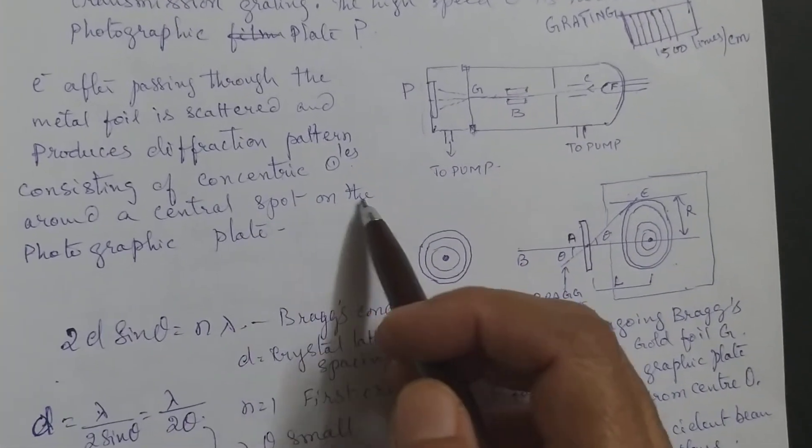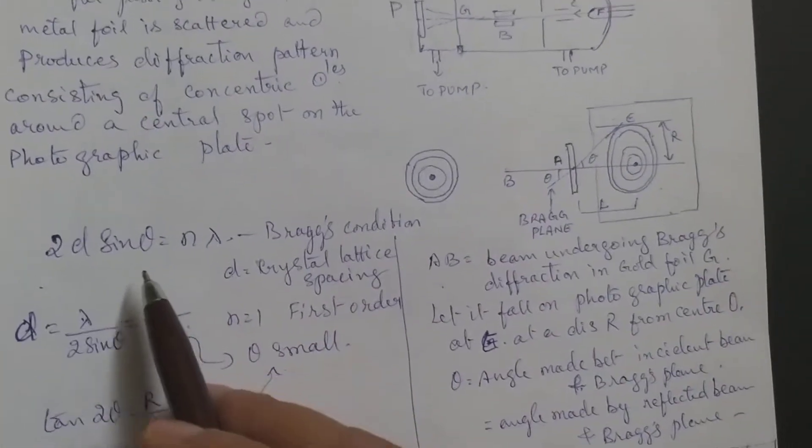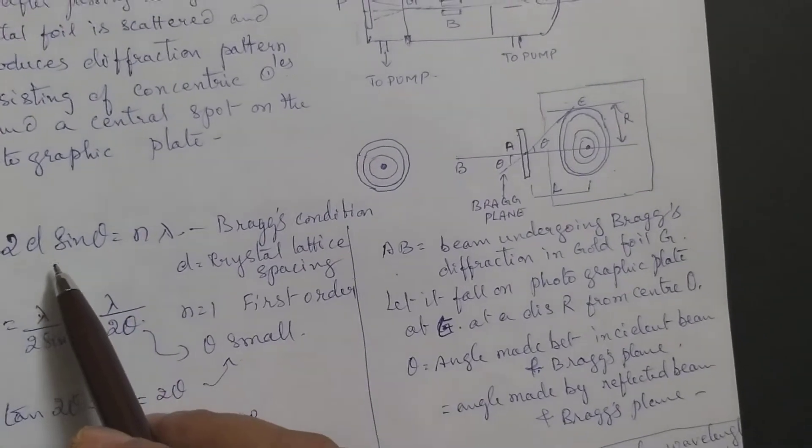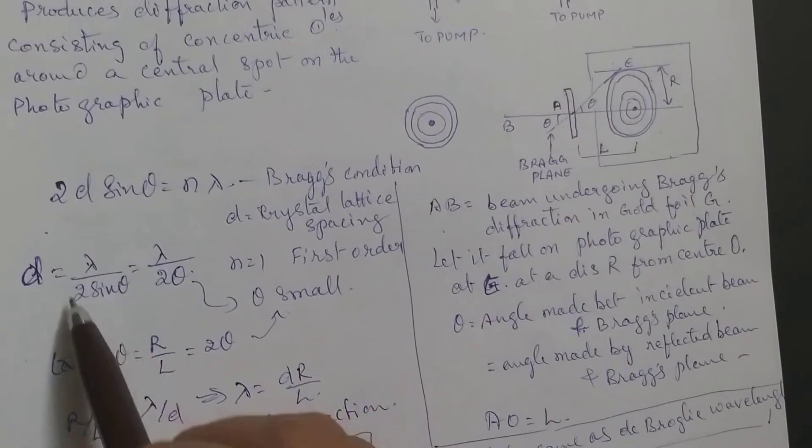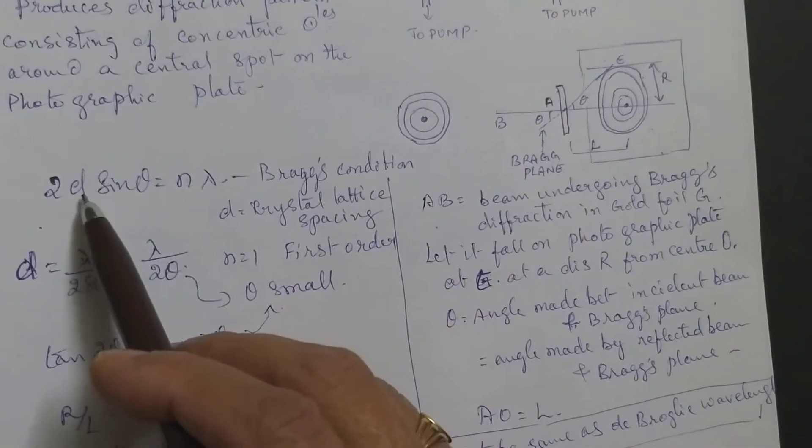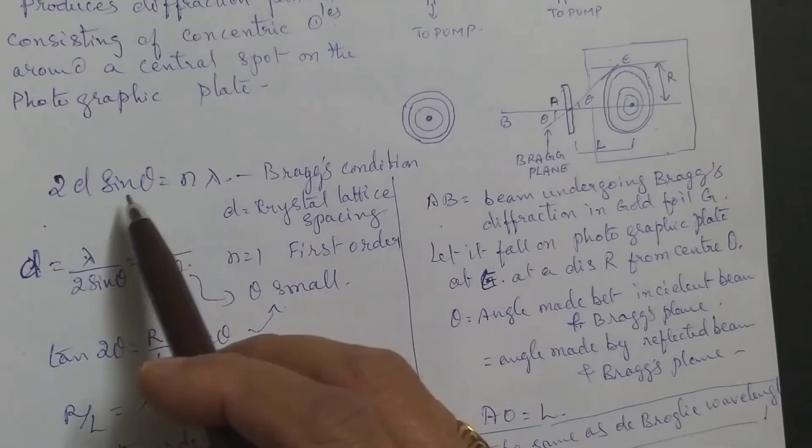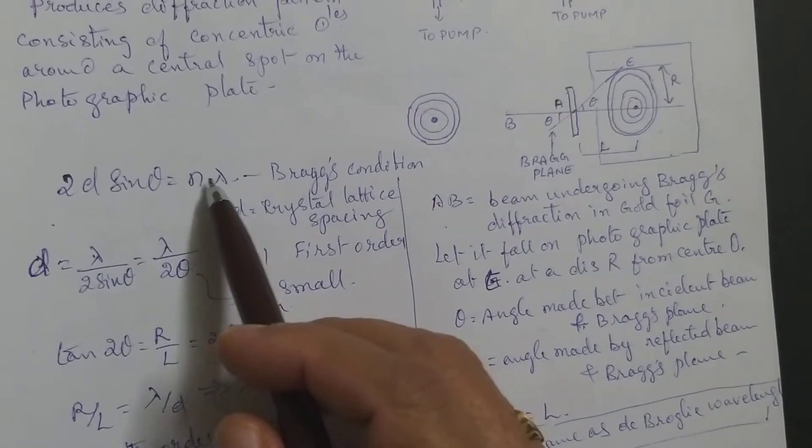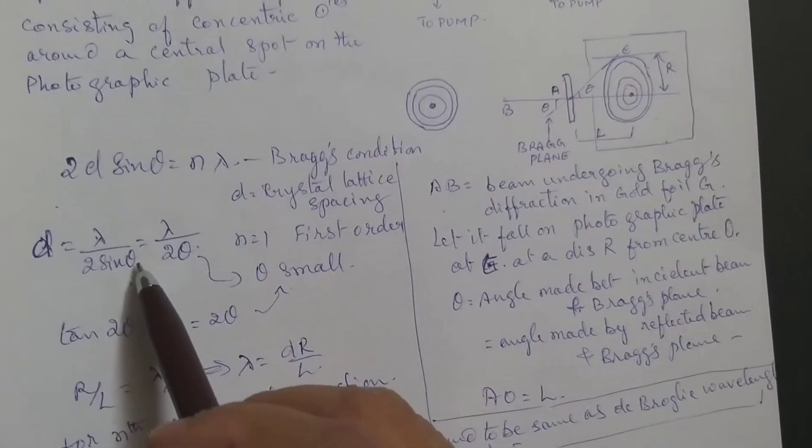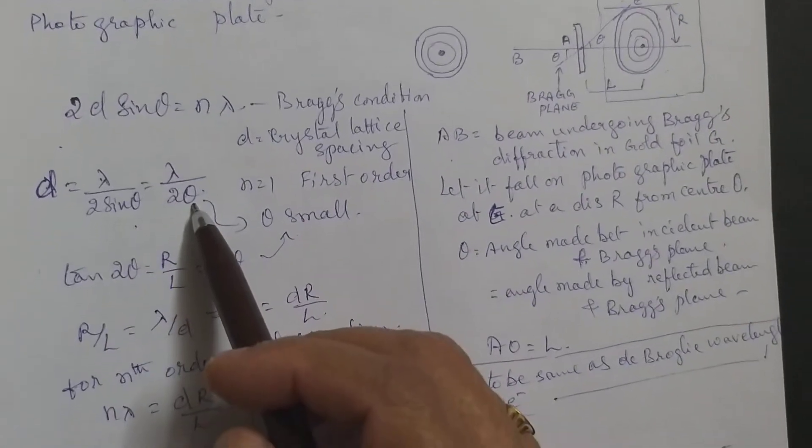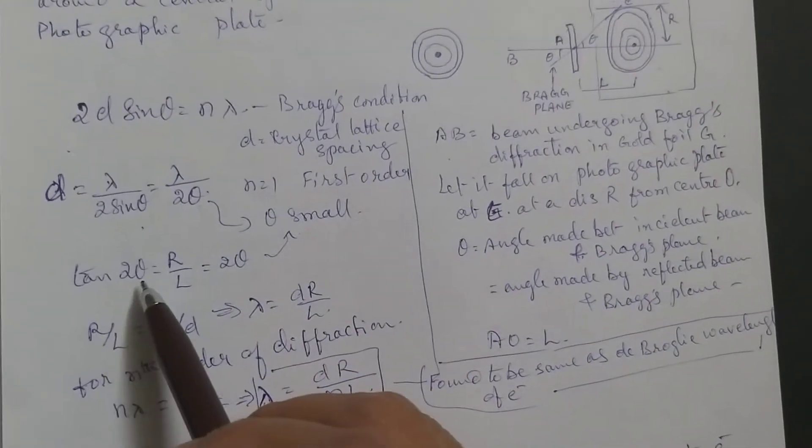Around a central spot on the photographic plate, the same equation continues: 2d sin theta equals n lambda. Here d equals lambda divided by 2 sin theta for first order where n equals 1. When theta is small, sin theta equals theta. Here tan 2 theta is used.